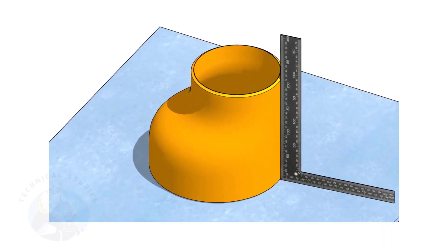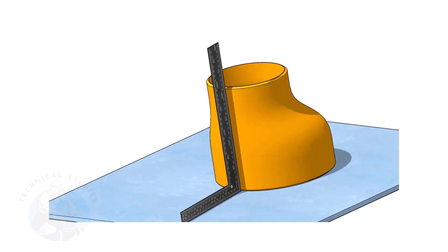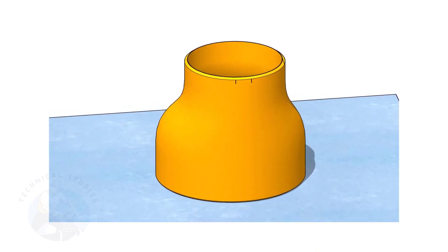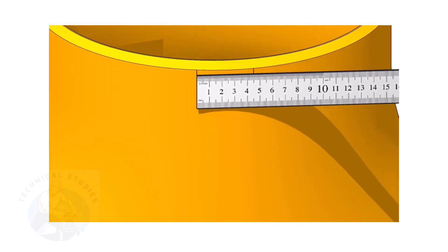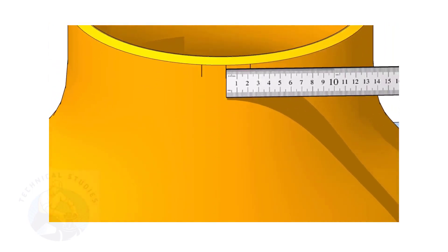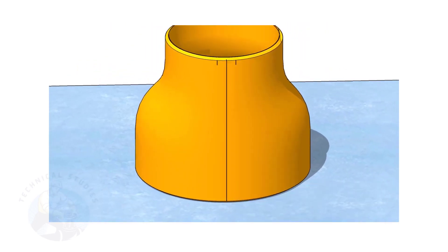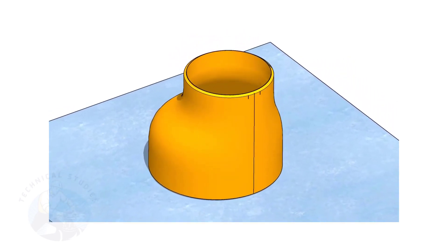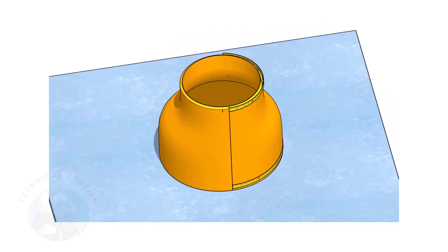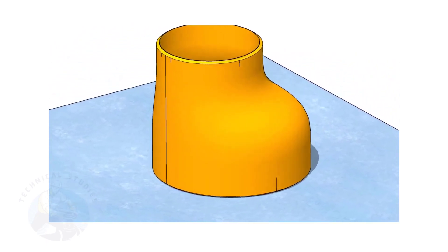It is good practice to mark the center lines of the fittings before starting the fit up, especially an eccentric reducer. I have already posted videos showing how to mark the center lines of an eccentric reducer in different methods. In this video, I will show you the method of fitting an eccentric reducer to a pipe that is already fitted to a flange. But this method is applicable for all the fittings. Remember, the sequence of the fit up is more important.